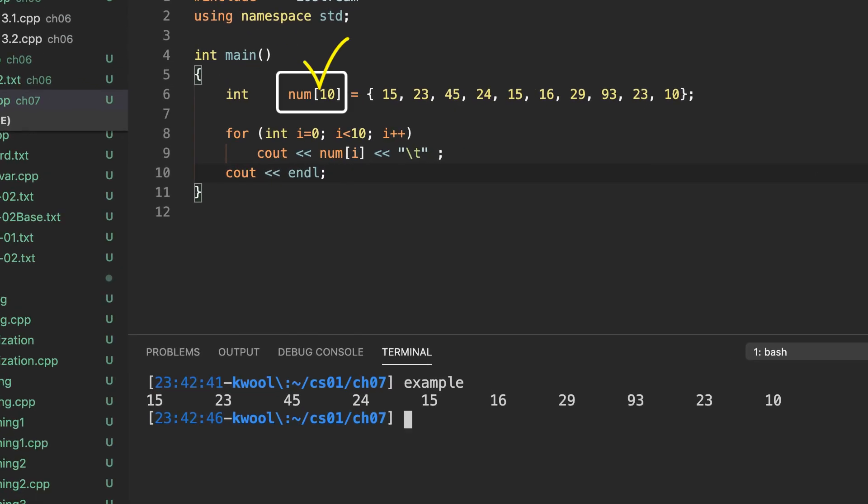When we declare the array, we use the bracket after the array name. And if you want to give the initial value, you can give the initial value inside of braces. If we want to access each element in the array, we need to use the element index with the array name.